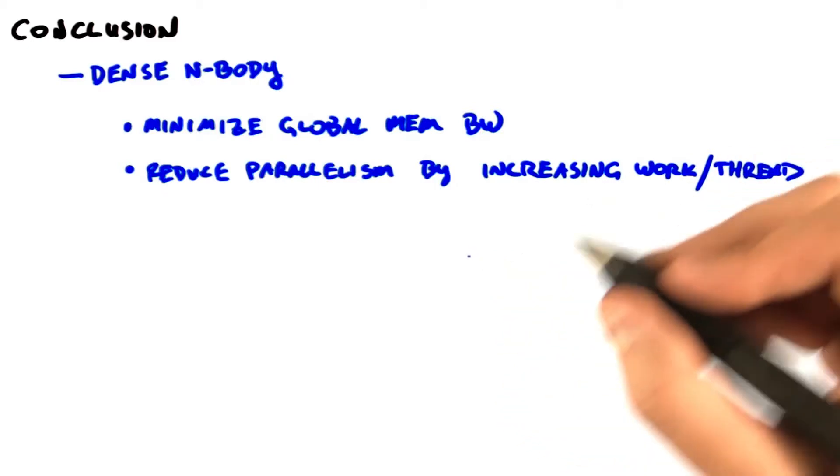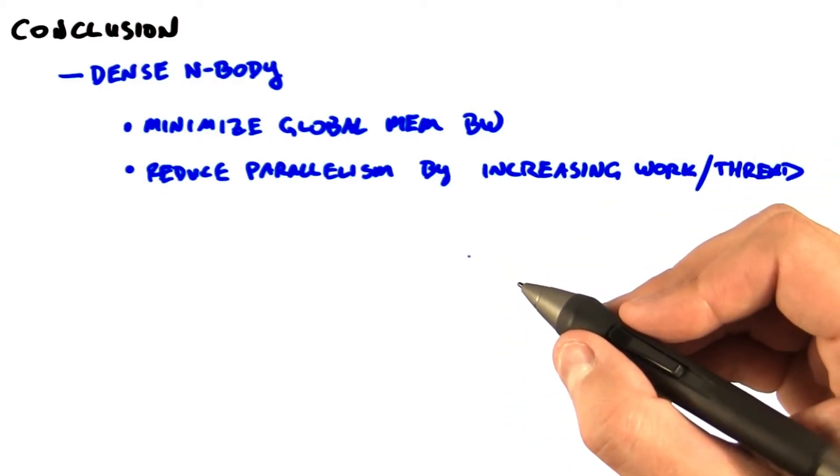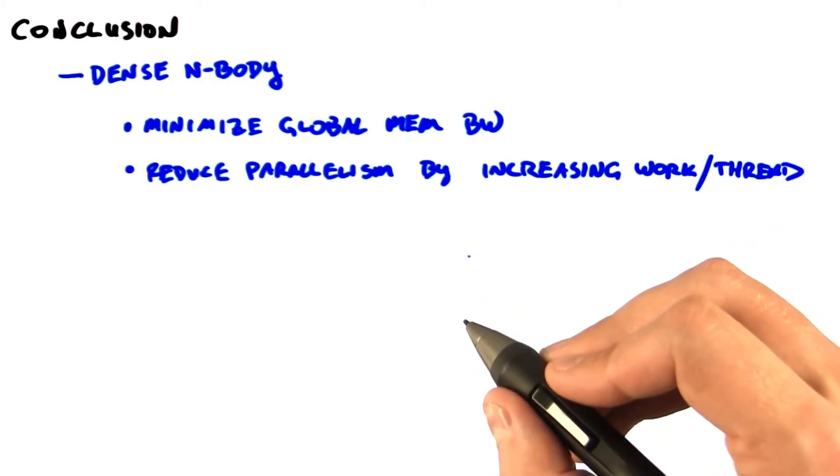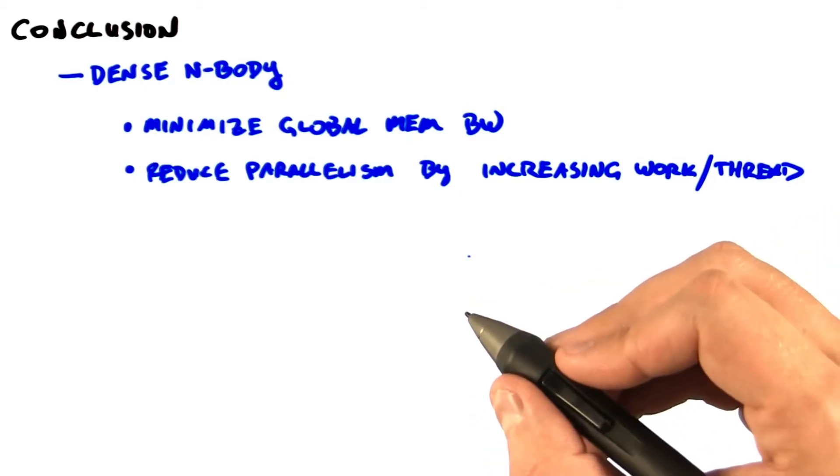And the second, reducing parallelism by increasing the amount of work per thread might reduce your overall communication cost, and hence your overall runtime.